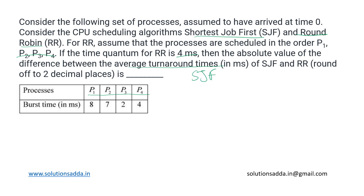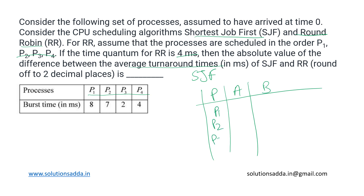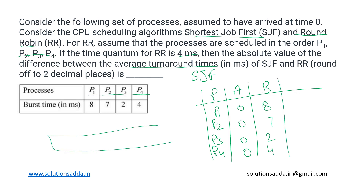First, let us go with SJF. It is a non-preemptive algorithm, so we construct its Gantt chart. All four processes P1, P2, P3, and P4 have arrival time zero. The burst times are eight, seven, two, and four milliseconds respectively. In the Gantt chart, the first process to execute is P3 because it has the smallest burst time — it runs for the first two milliseconds. Then P4 runs up to six milliseconds, then P2 for seven milliseconds up to thirteen, and finally P1 for eight milliseconds up to twenty-one.